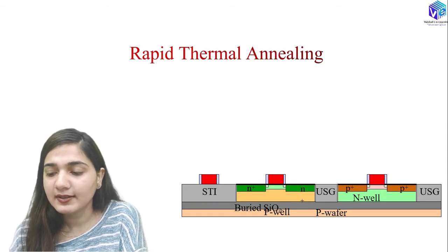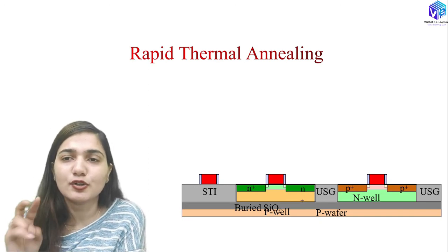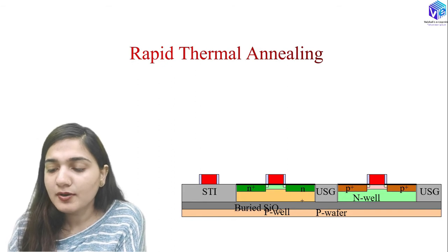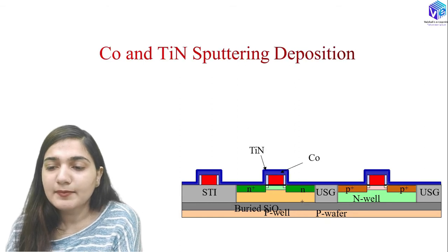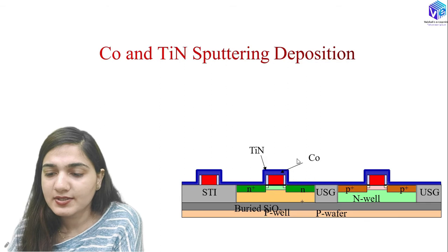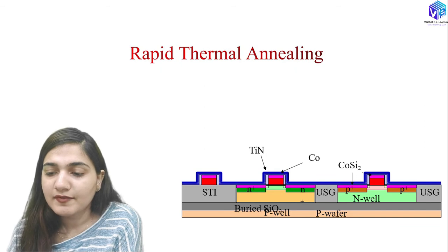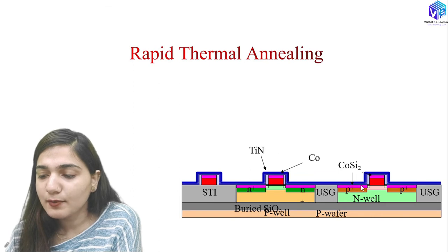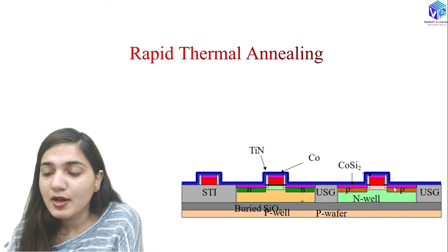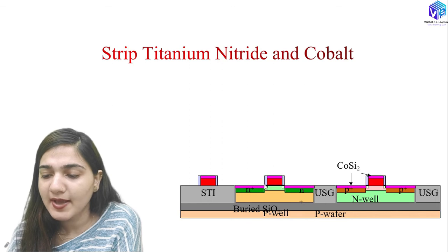After stripping the photoresist and rapid thermal annealing (RTA), the MOSFET inside the chip is formed. Next, argon sputtering etch is performed, followed by cobalt and titanium nitride sputtering deposition over the structure. After rapid thermal annealing, cobalt silicide is formed at the gate, source, and drain surfaces. Excess cobalt and titanium nitride are stripped, leaving cobalt silicide at the surface.